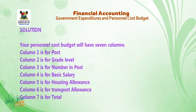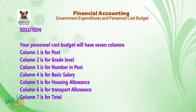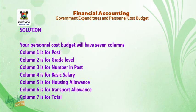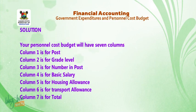Solution: your personnel cost budget will have seven columns. Column one is for post; column two is for grade level; column three is for number in post; column four is for basic salary; column five is for housing allowance; column six is for transport allowance; column seven is for total.